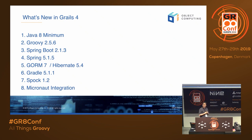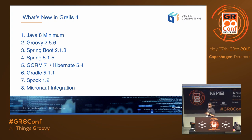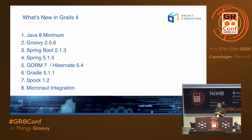Several things have changed in Grails 4. First, we finally dropped Java 7, which is great because many projects Grails is built on top of no longer support it. We've upgraded to Groovy 2.5.6 in the latest release candidate — there's a 2.5.7 but it's mostly bug fixes, and we'll probably upgrade before releasing. There's also a big update to Spring Boot: Grails 3 used Spring Boot 1.5, and now we're using Spring Boot 2.1.